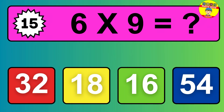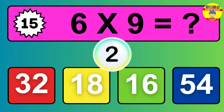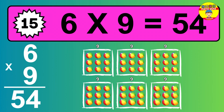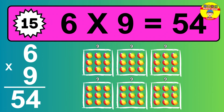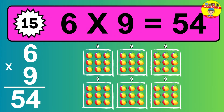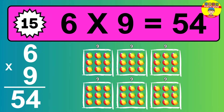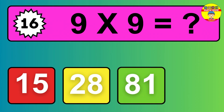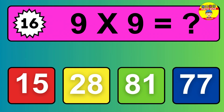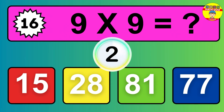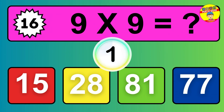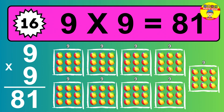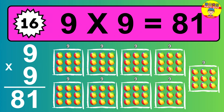Question 15. Six times nine equals what? The answer is six times nine is 54. To calculate, we have six groups with nine balls each one. So how many balls do we have? 54 balls. Question 16. Nine times nine equals what? The answer is nine times nine is 81.